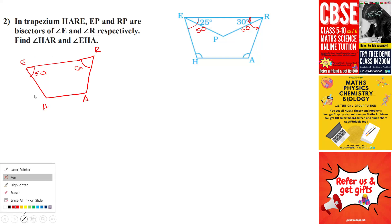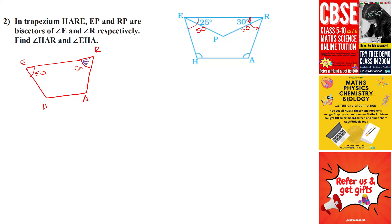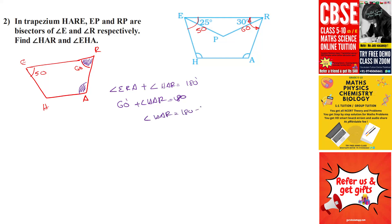We know the property of a trapezium: if we add two adjacent angles, this angle plus this angle, we get 180°. So angle ERA plus angle HAR equals 180°. Since angle ERA is 60°, angle HAR equals 180° minus 60°, which is 120°.